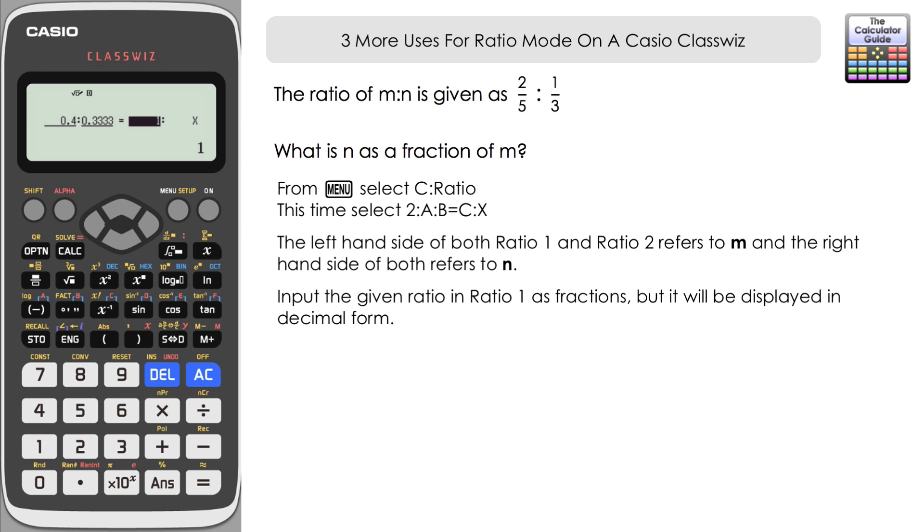Moving to ratio 2. So the way that we need to think about this, what is n as a fraction of m? One whole lot of m. What is n as a fraction of one lot of m? So we're going to keep m as one. One lot of m. So we've got one here on the left-hand side, which is m.